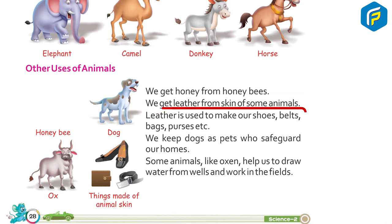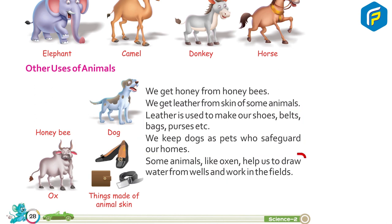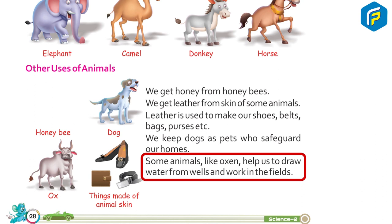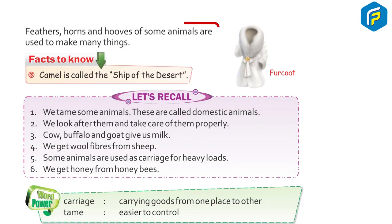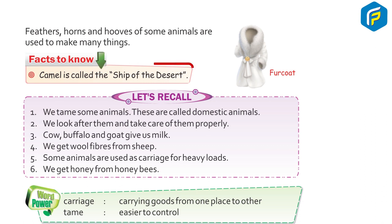We keep dogs as pets who safeguard our homes. Some animals like oxen help us to draw water from wells and work in the fields. Feathers, horns, and hooves of some animals are used to make many things. A fact to know: the camel is called the ship of the desert.